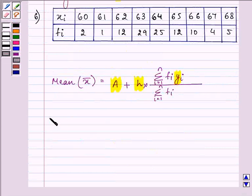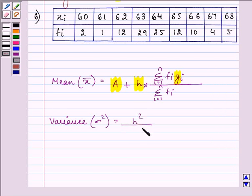Now let me write down the formula for variance also. We do not need to find the variance but for finding the standard deviation we need to firstly find out the variance. The formula is h square upon summation fi, i is equal to 1 till n, the whole square into summation fi yi square minus summation fi yi the whole square, i is equal to 1 till n.